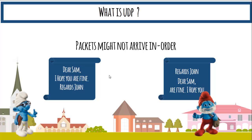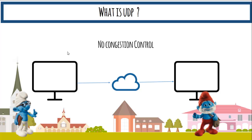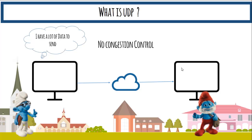This leads to the conclusion that UDP is not suitable for protocols involved in chatting. Another limitation: if one computer has a lot of data to send and the receiving computer has limited resources, the receiver has no way to tell the sender to slow down. That is congestion control — a mechanism to inform the sending machine it's sending too fast. UDP does not have any such congestion control methodology.